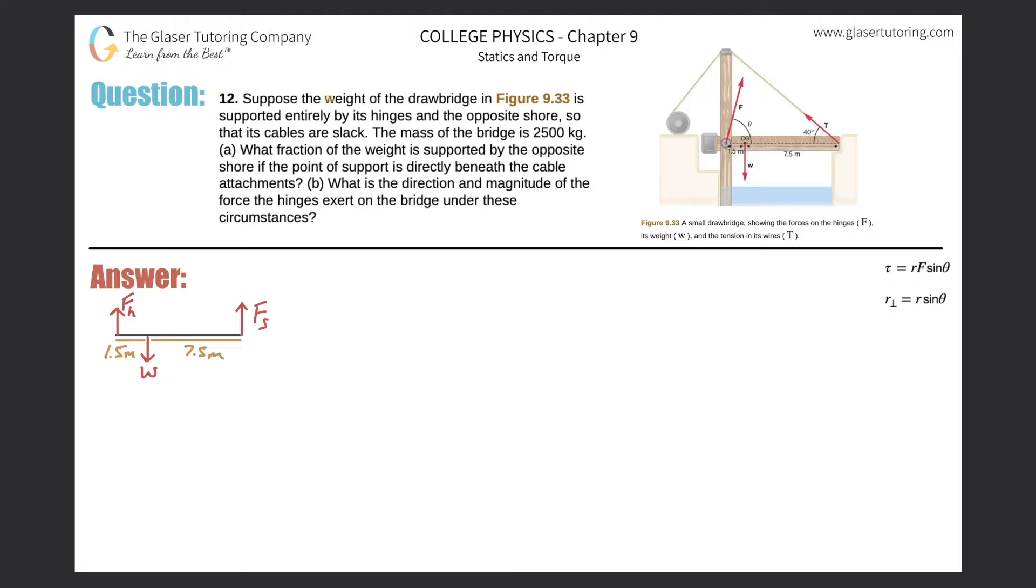Number 12. Suppose the weight of the drawbridge in figure 9.33 is supported entirely by its hinges and the opposite shore so that its cables are slack. The mass of the bridge is 2,500 kilograms.